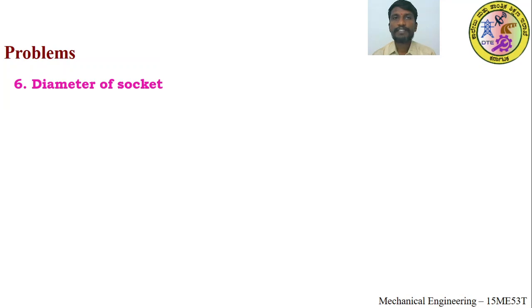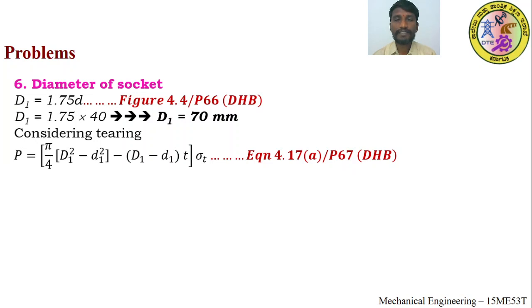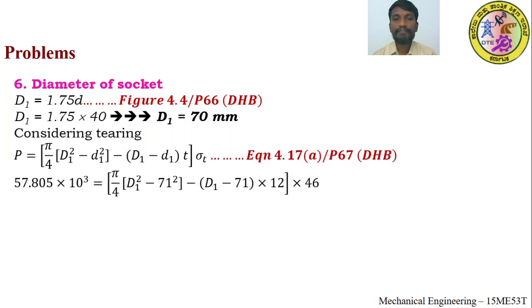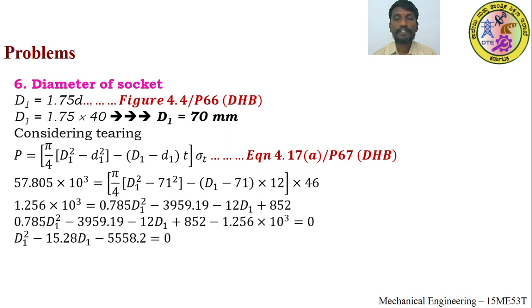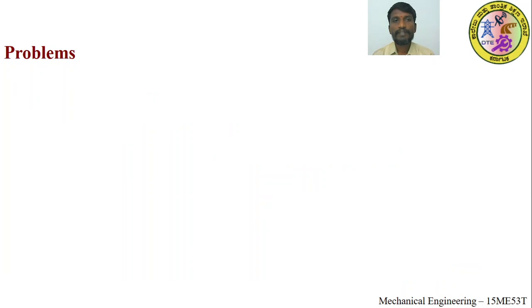Point 6 — Diameter of socket D1: From figure 4.4 (page 66), D1 = 1.75 × d = 70 mm. Considering tearing (equation 4.17a, page 67), this leads to a quadratic equation. Solving the quadratic, D1 = 82.58 mm. Taking the maximum and rounding up, D1 is adopted as 85 mm.